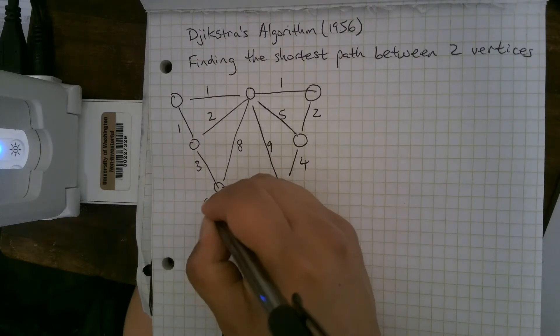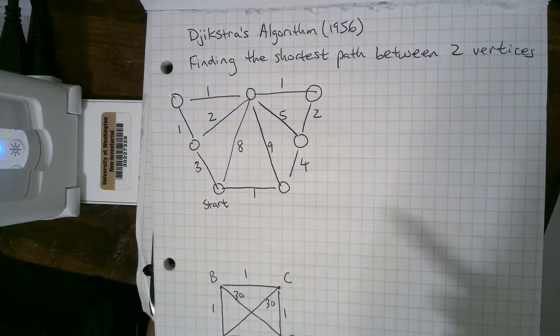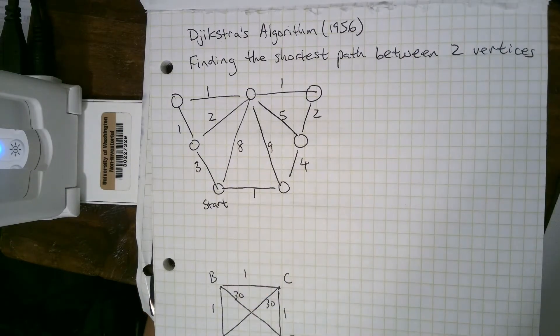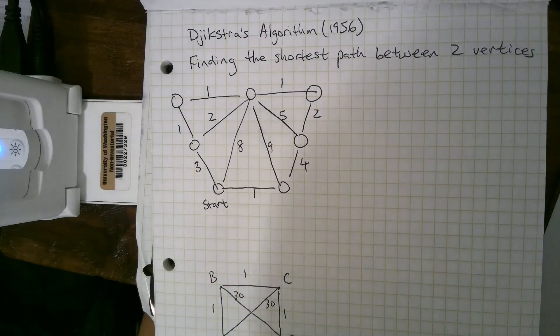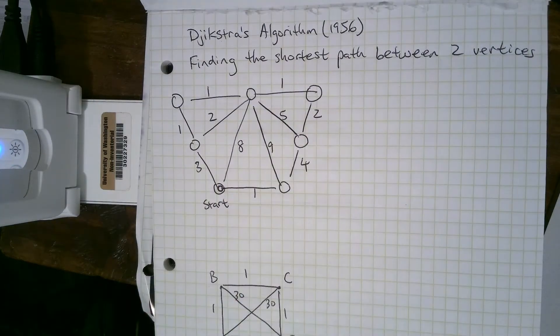So we need to pick a starting vertex, and actually in this process, we'll find the shortest path from the starting vertex to every other vertex in the graph. So we'll start with the vertex itself. The shortest path from here to here is 0 because we don't need to go anywhere, so we'll fill in a 0 there.